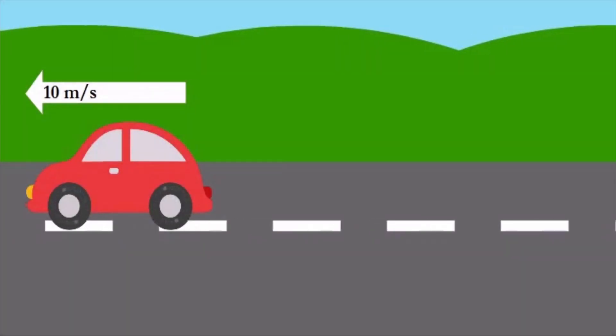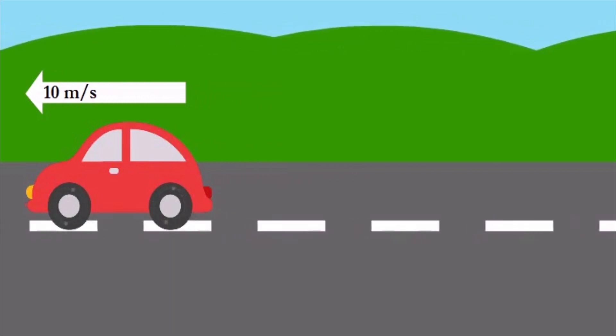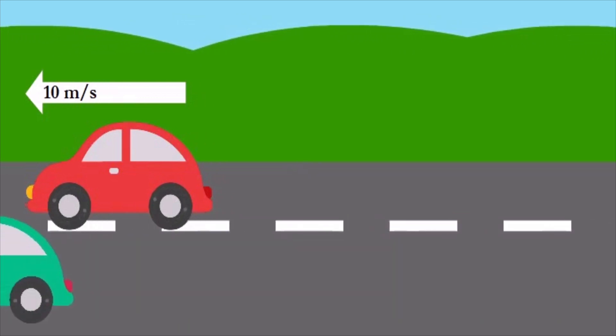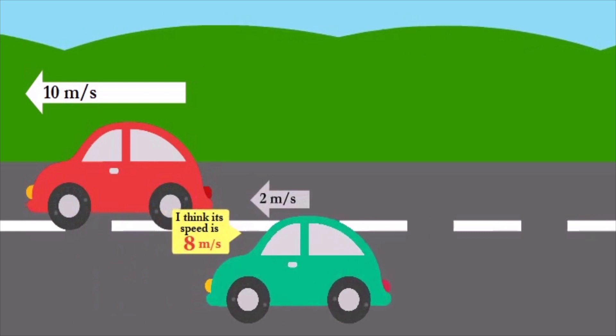Hawking radiation can be thought about in another manner. Imagine that I am traveling in a car at constant speed of 10 meters per second. I just zoom past you and you don't notice anything unusual. But now you are sitting in another car and start chasing me with a constant acceleration of 1 meter per second per second.